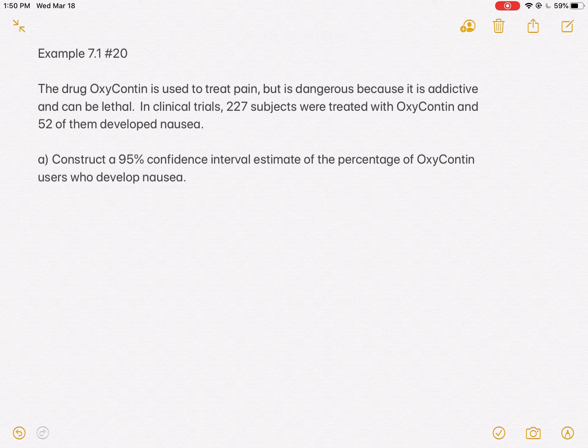And so what they want us to do is to construct a 95% confidence interval estimate for the true percentage of OxyContin users who develop nausea. They'll interchange the word percentage and proportion, but I'll show you what that means in the end.